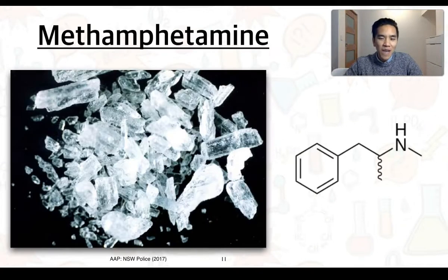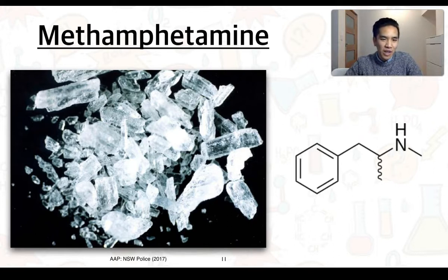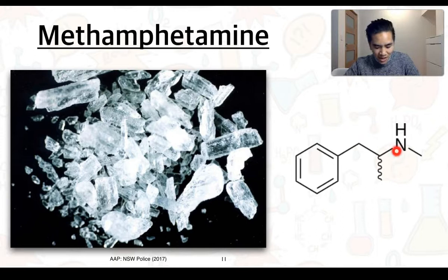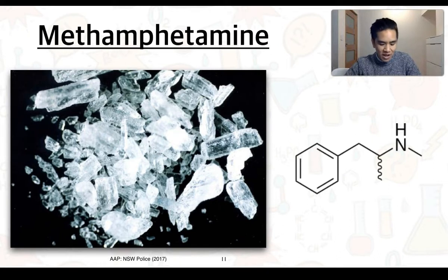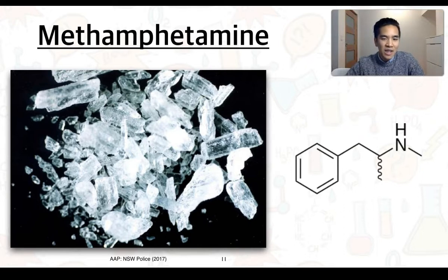One example of an amine is methamphetamine. You may commonly hear this being referred to as crystal meth or ice. We can see that it is an amine. And more specifically, it's a nitrogen bonding to 2 carbons, making it a secondary amine. And it's got quite a simple structure here. Unfortunately for Australia, we actually have the highest use of methamphetamine in the English-speaking world, and one of the largest in any country in the world.